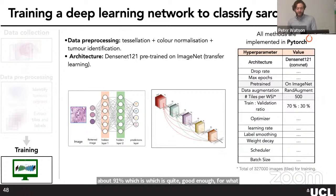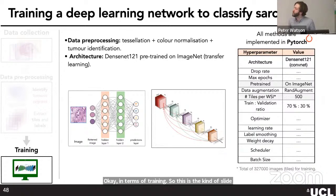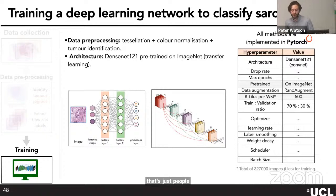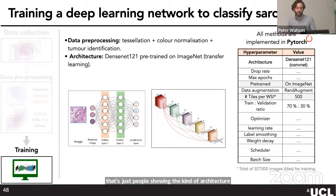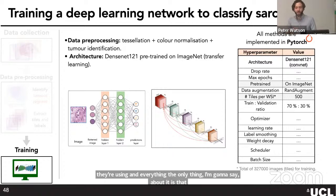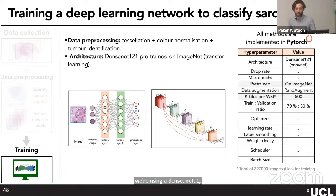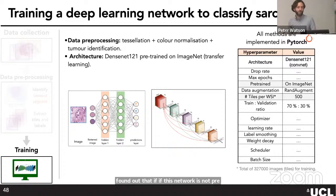For training, we use a DenseNet-121 pre-trained on ImageNet — a transfer learning approach. We found that without pre-training, the network does not work nearly as well.